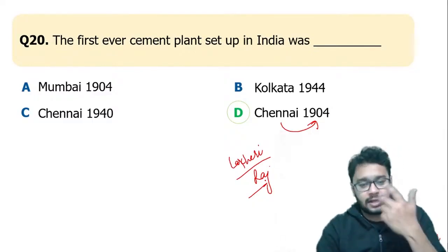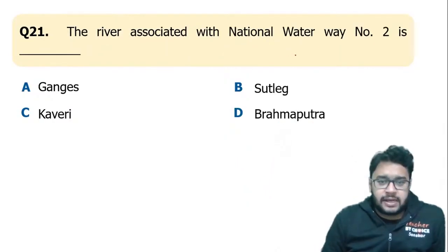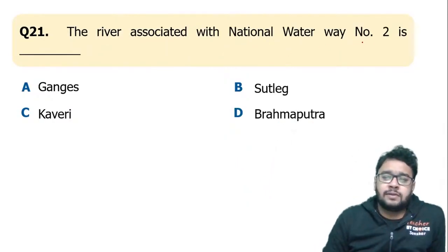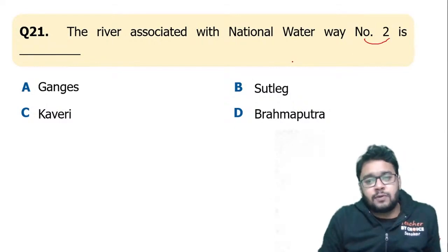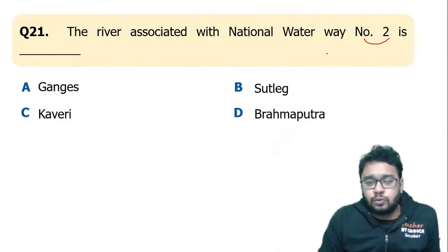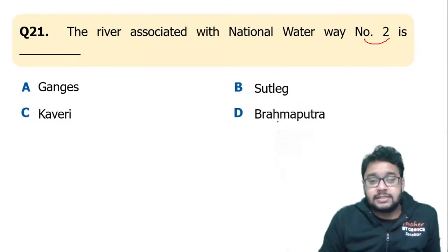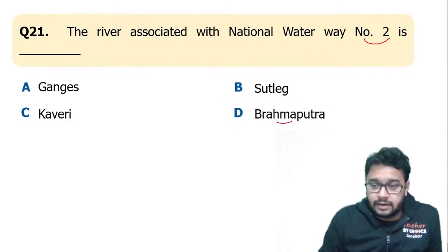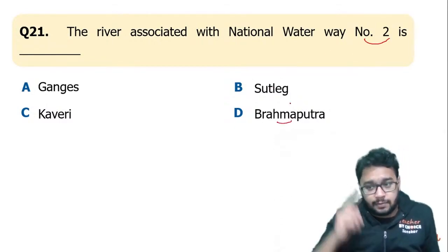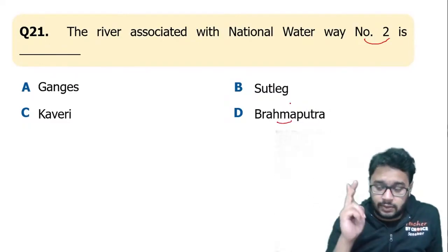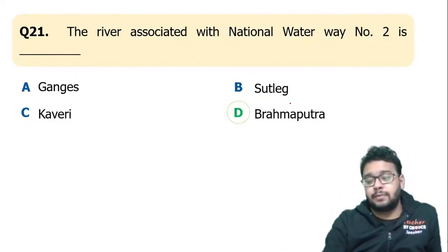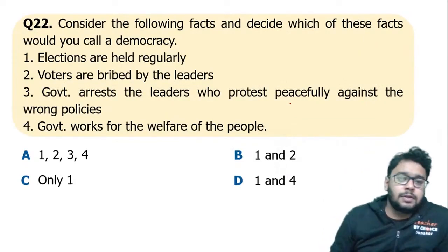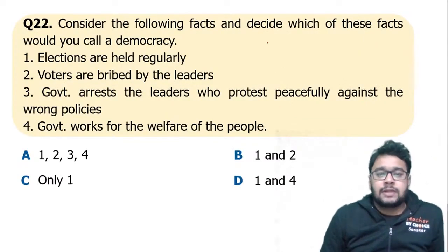The river associated with National Waterway Number 2 is the Brahmaputra River. Brahmaputra is Waterway Number 2, and the Ganga is Waterway Number 1.